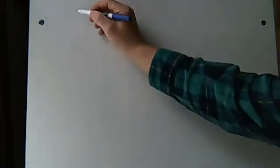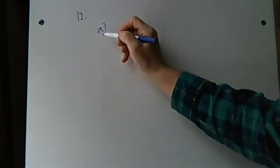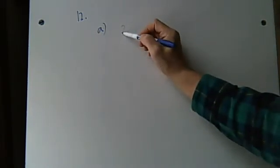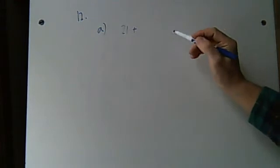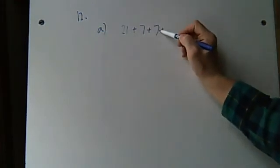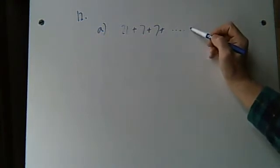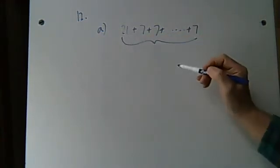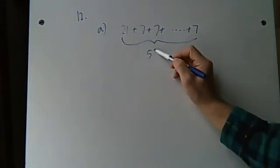Now let's go to problem number 12. Problem number 12. Problem number 12 is like this. Problem number 12 is like this. A, it says, find, I don't know, it says 21 plus 7. Plus 7. Plus 7. Plus dot dot dot dot dot. Plus 7. And then they tell you that there are 57 terms.